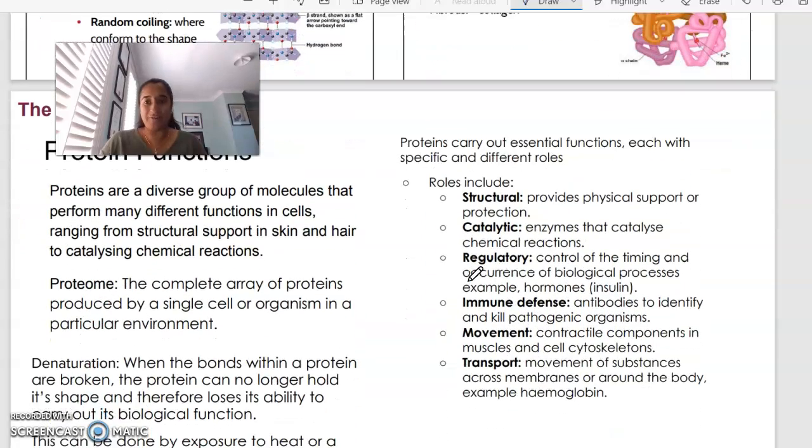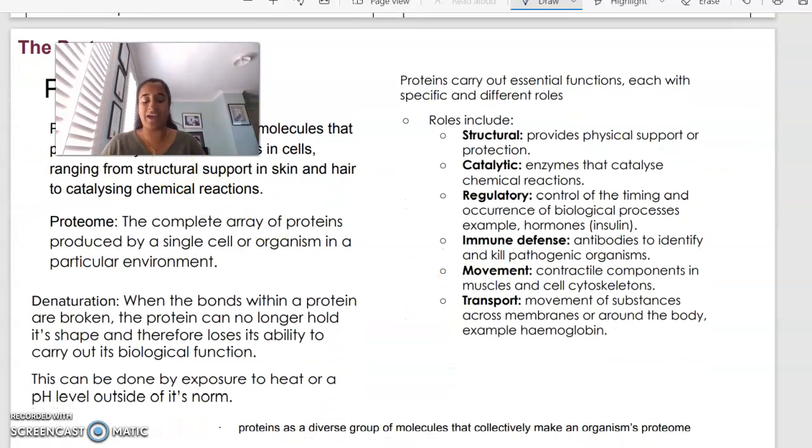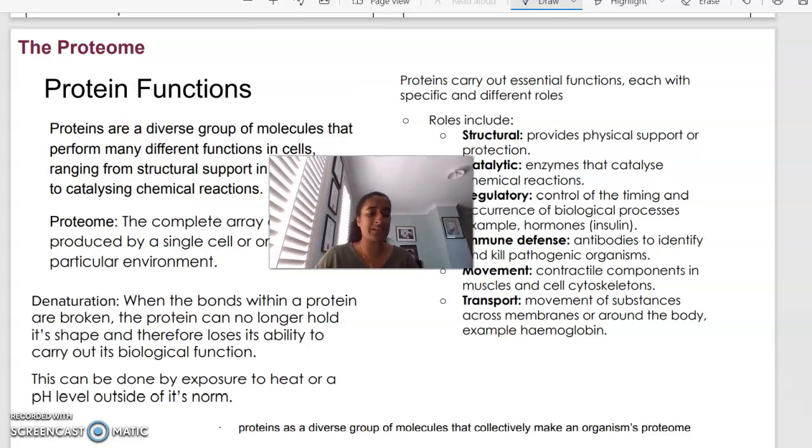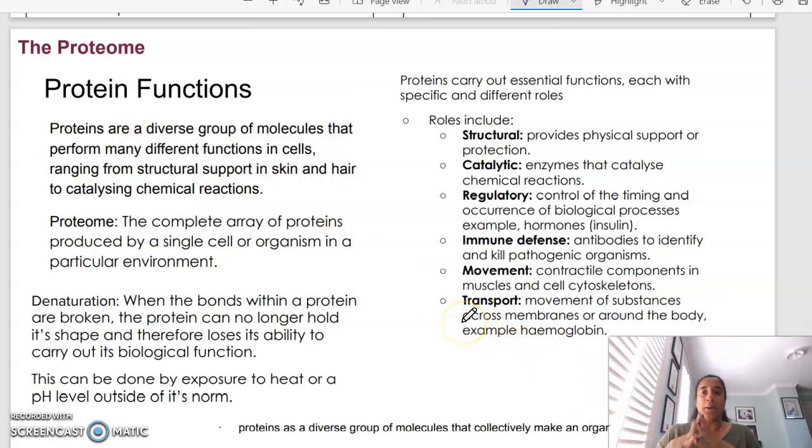We will then have our functional protein. And proteins, there's so many different types of proteins. When we talk about the proteome, we basically talk about all of the proteins that are produced in a single cell or an organism. Proteins are diverse. There's so many different kinds. They all have really different functions, but some of their roles are summarized here.